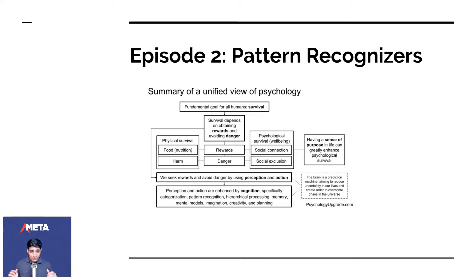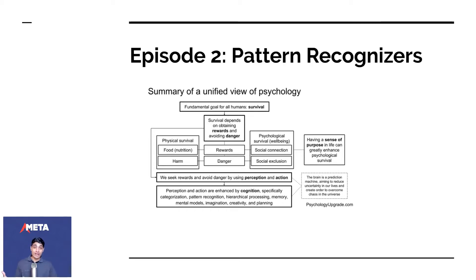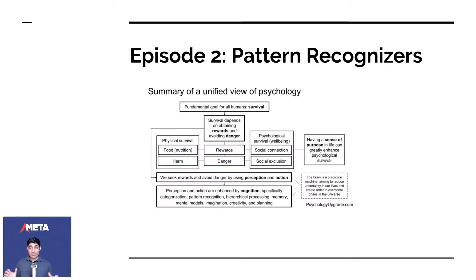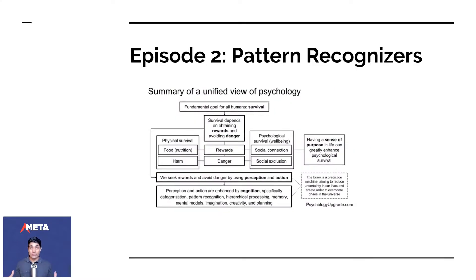At the end of the day, we'll understand that the brain is a prediction machine, and it aims to reduce uncertainty in our lives because a lot of things around us are uncertain. It's important to categorize everything, put it on a shelf so we're able to retrieve it at will. This is actually a unified view of psychology, and we're going to dive deeper into the nitty-gritties.